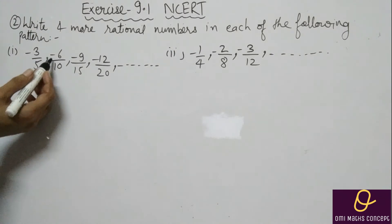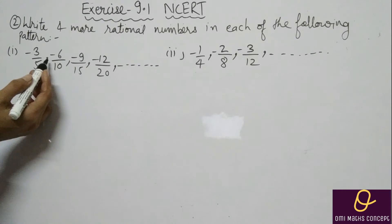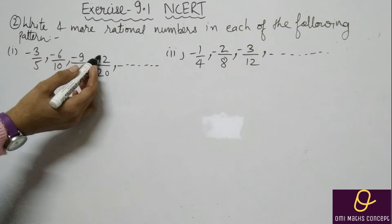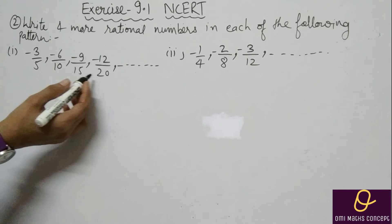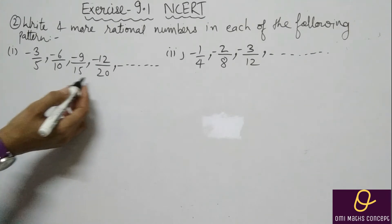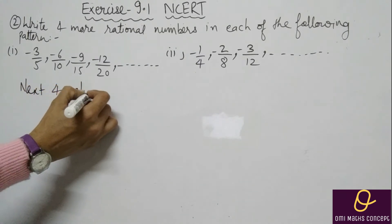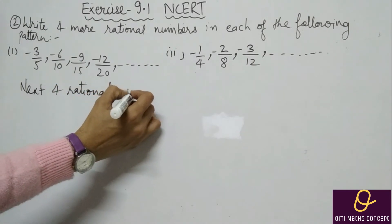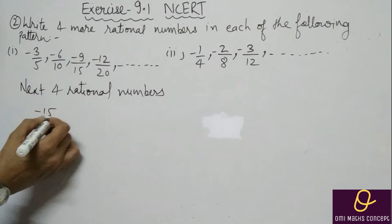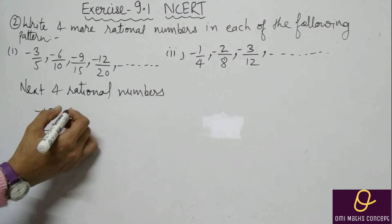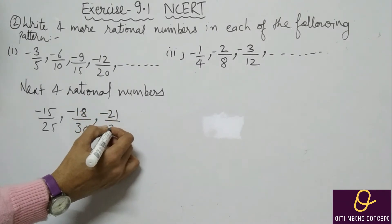3 by 5, 6 by 10 — isme aapko dekh ke pata chal raha hai: 3, 6, 9, 12 — toh ye table ban rahi hai puri. Neeche dekhe: 5, 10, 15, 20 — neeche bhi aisi table ban rahi hai. Toh next four rational numbers kya honge? Minus 15 by 25, then minus 18 by 30, minus 21 by 35, minus 24 by 40. Ab isme minus 1, minus 2, minus 3 — is type se hai.